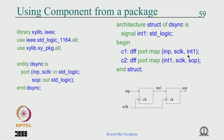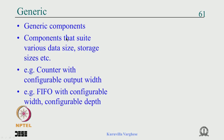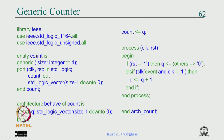You can include multiple component declarations within a single package, followed by the entity and architecture of all the components. When instantiating, named association is better than positional association because you do not need to remember the order of formal parameters. For reusability, components should be generic — for example, a counter should work for 8-bit, 16-bit, and so on, using a generic parameter for the size.